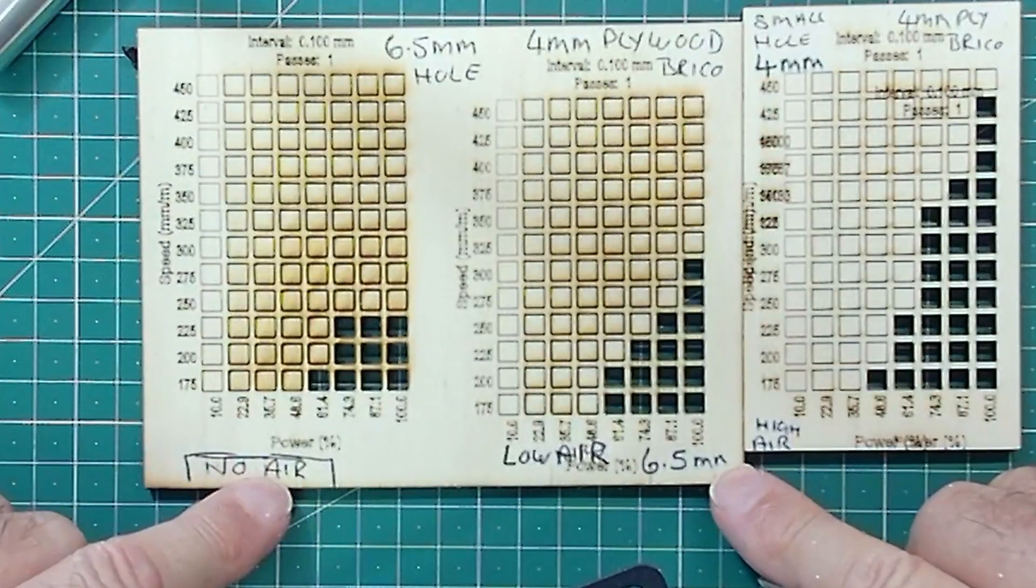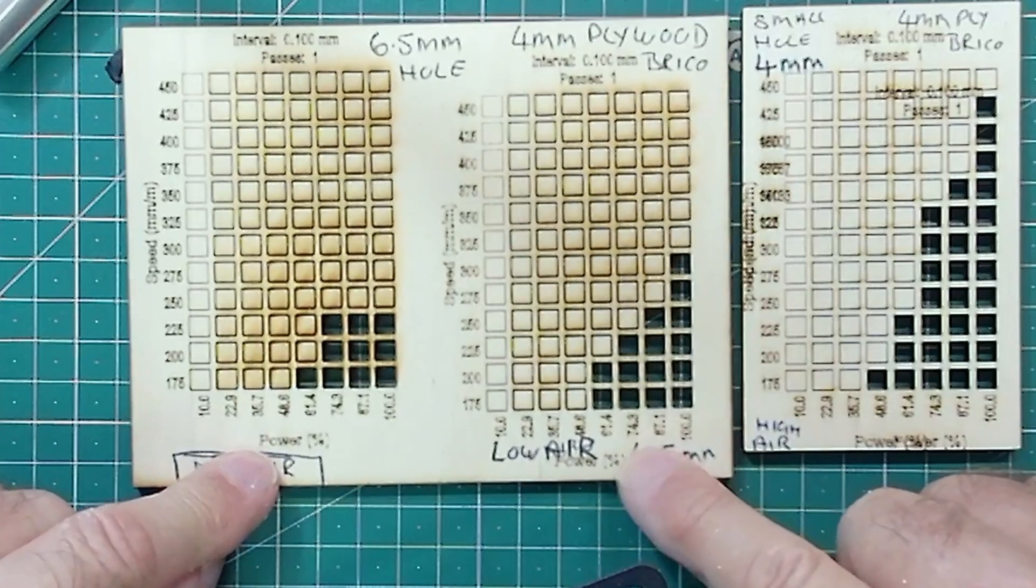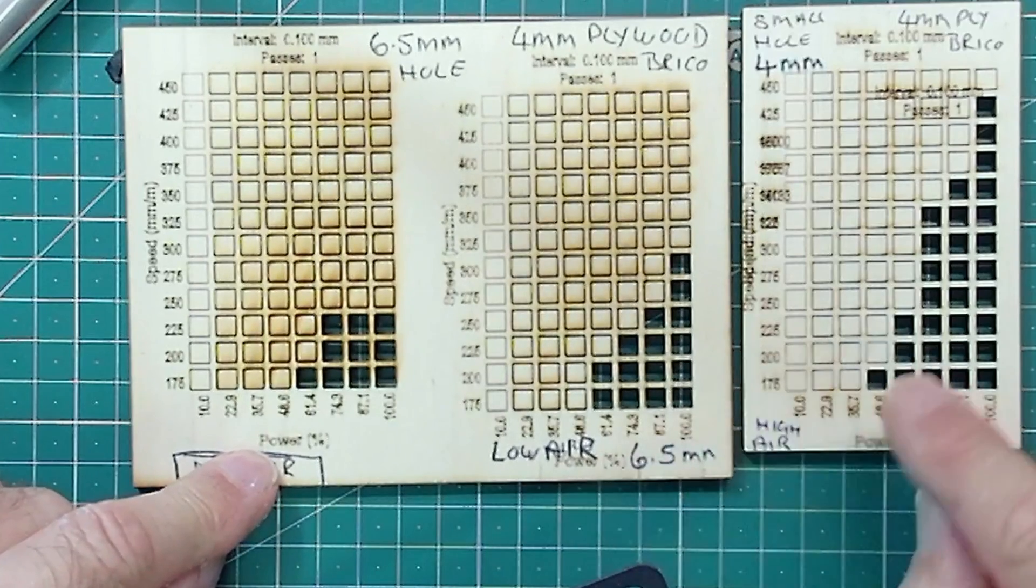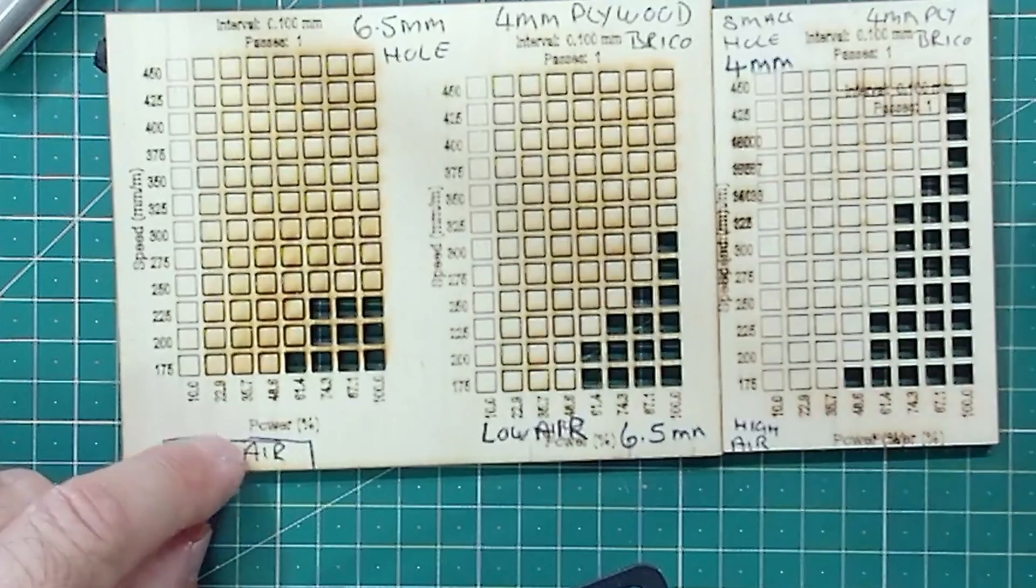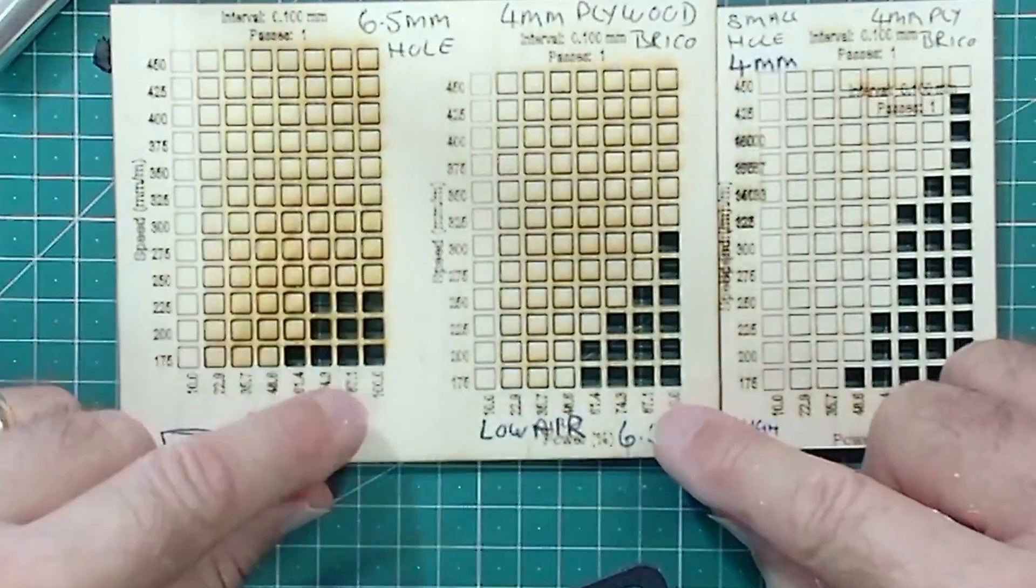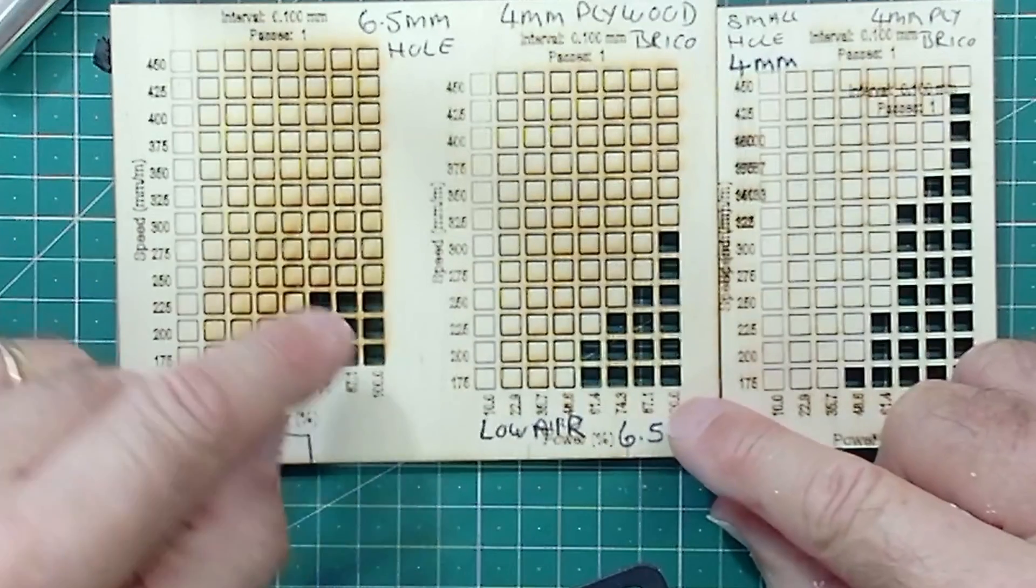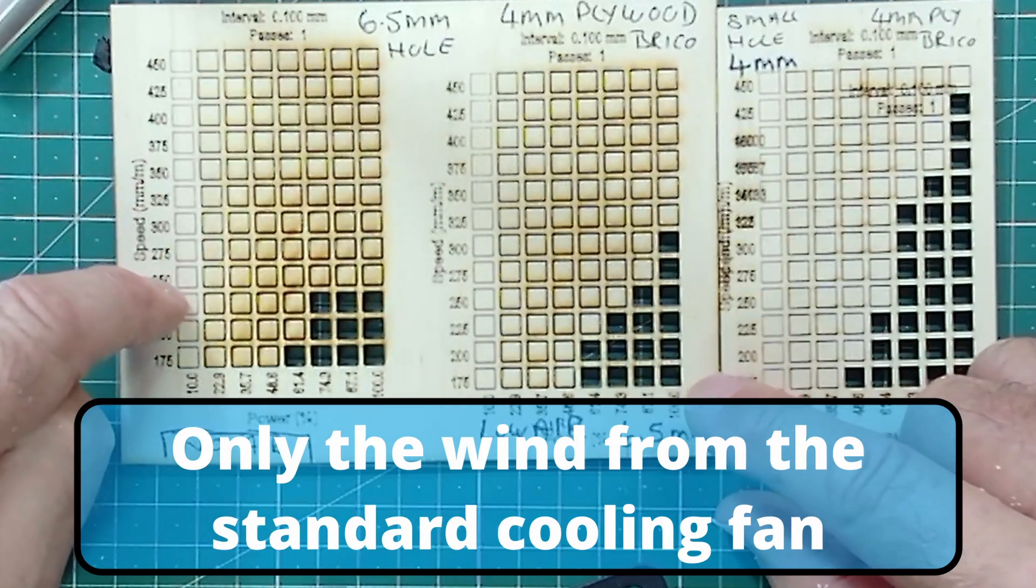This was with no air assist, this was with air assist with a large hole, and this was with air assist with a smaller hole. So you can see with no air assist you're getting not much penetration on the cut and you're getting lots of brown staining.